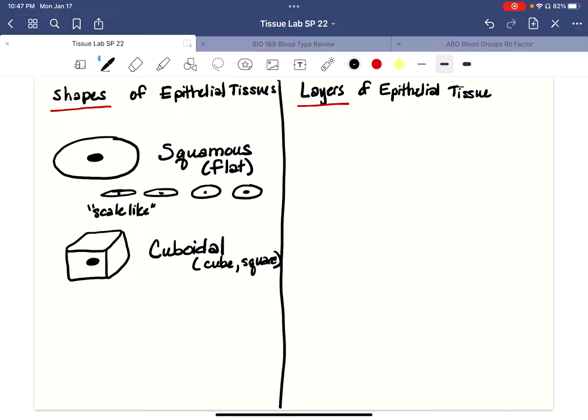And our third type, our third shape, is really tall and thin, and this one's called columnar. I'll just put a nucleus in that, trying to give it a little dimension there. So this one is columnar, like a column. Tall and thin.